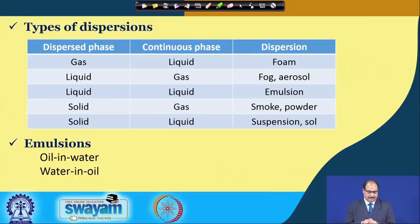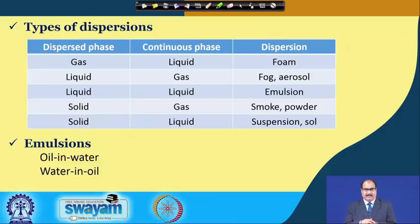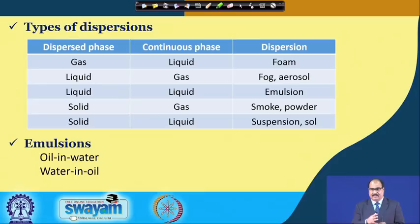Emulsions may be present in two forms: oil in water, or water in oil. Milk is a good example — the fat present in natural milk is an emulsion of oil in water. But when this fat is separated from milk as cream and the cream is further converted into butter, the phase changes, and it becomes an emulsion of water in oil.